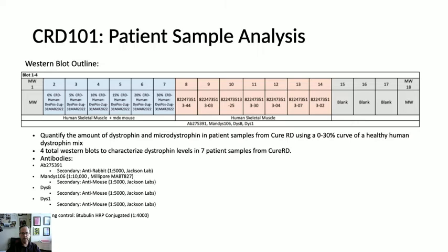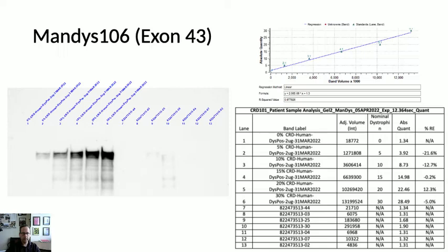We then had a series of patient samples and a couple of blank wells, and this layout was used across four different antibodies run in four different blots. Looking at MANEX 106, we had really clear ability to distinguish between 0%, 5%, 10%, 15%, 20%, and 30% dystrophin, with no appreciable bands in the patient samples — essentially negative.